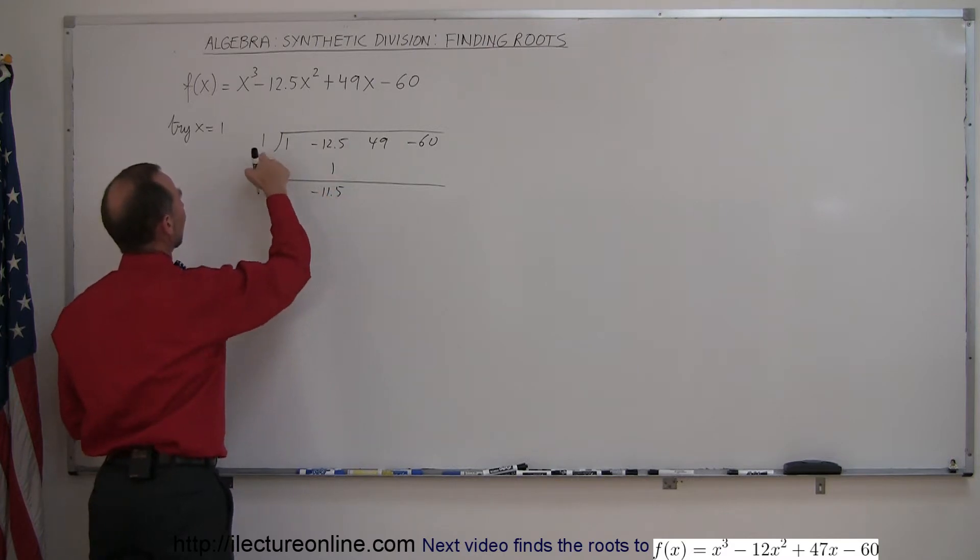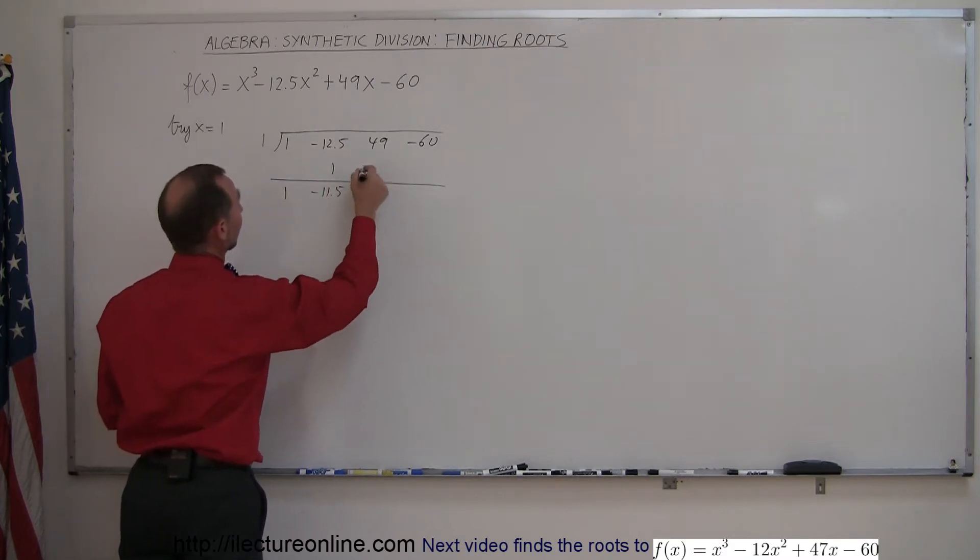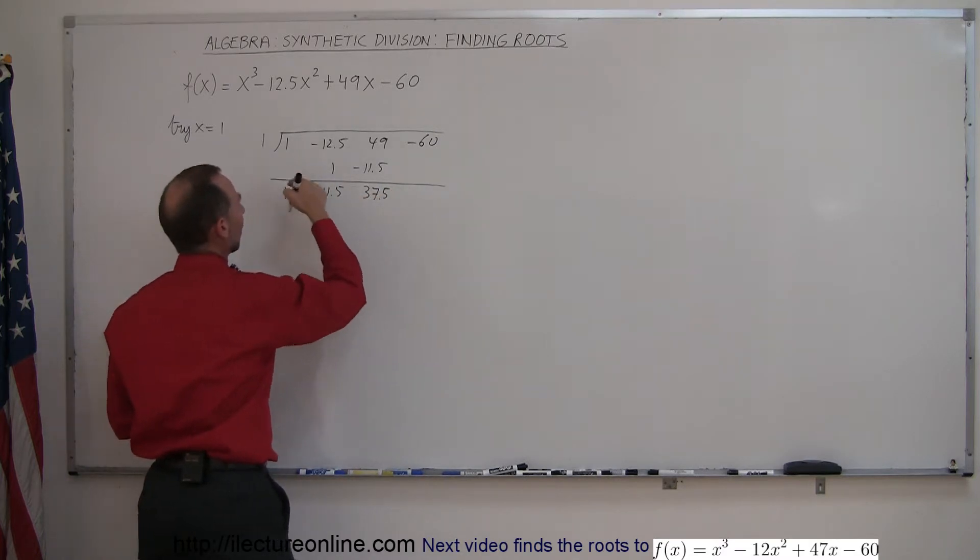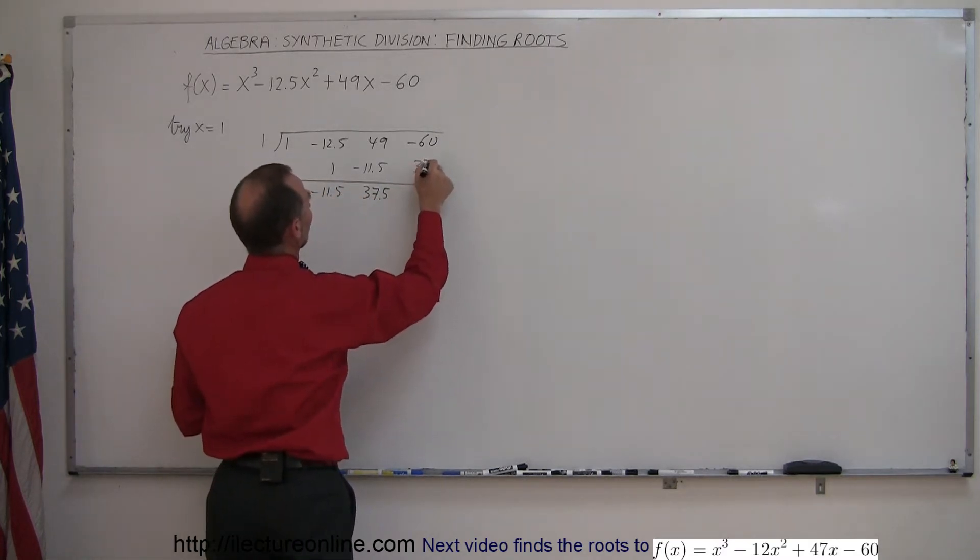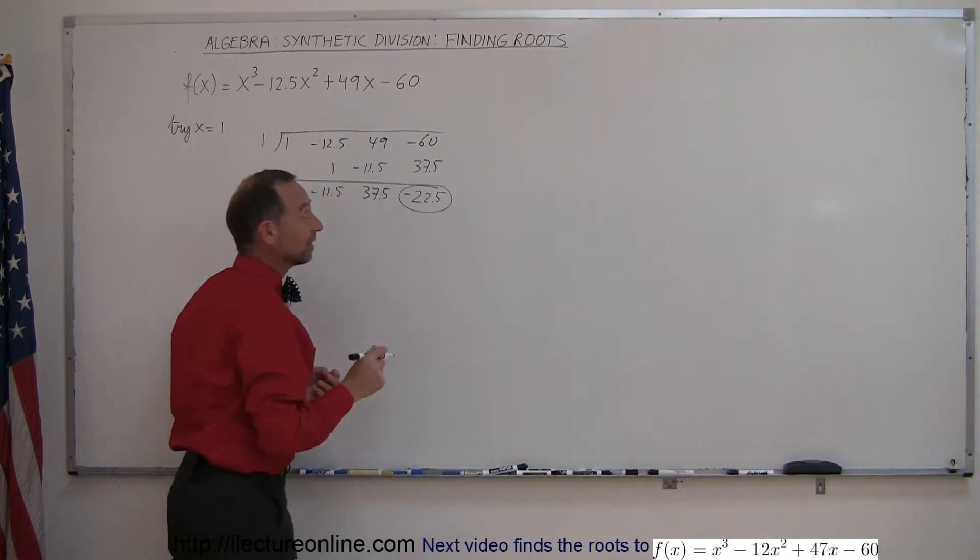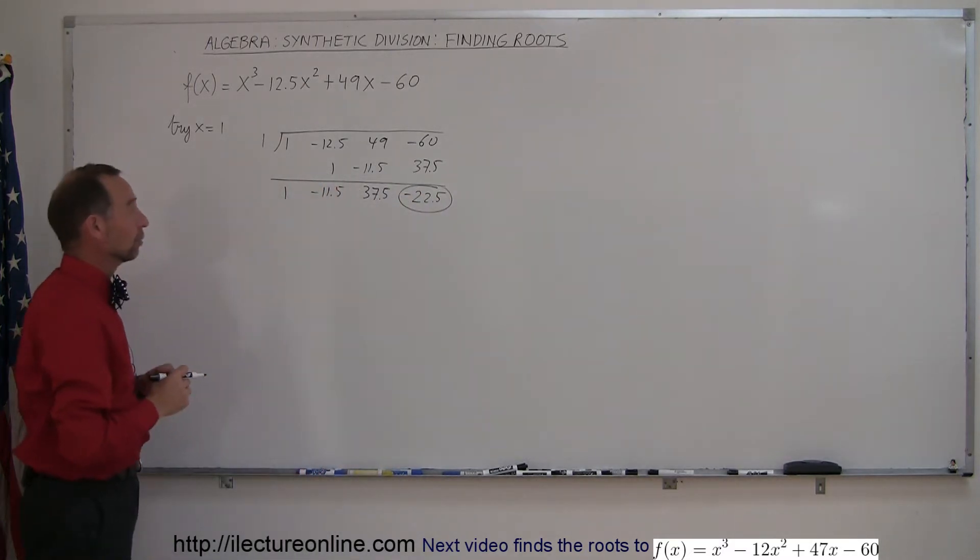Minus 11.5 times 1 is minus 11.5. Add those together you get a positive 37.5, and 37.5 times 1 is 37.5, and the remainder is minus 22.5. So definitely not a zero, so x equals 1 is not a root.